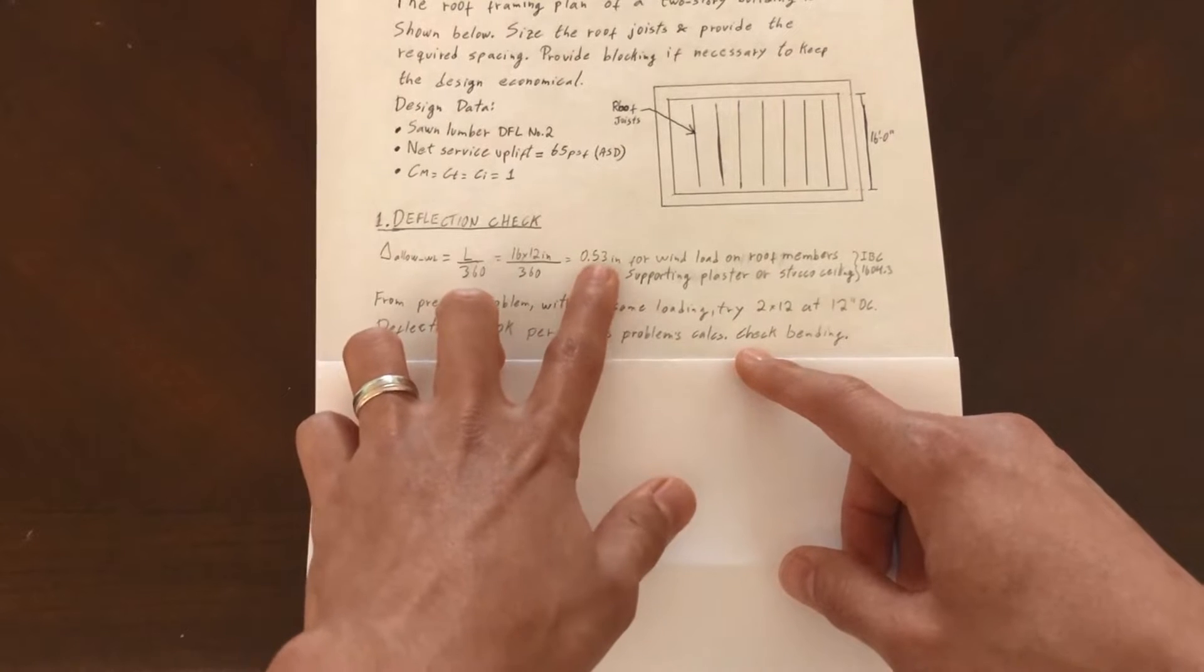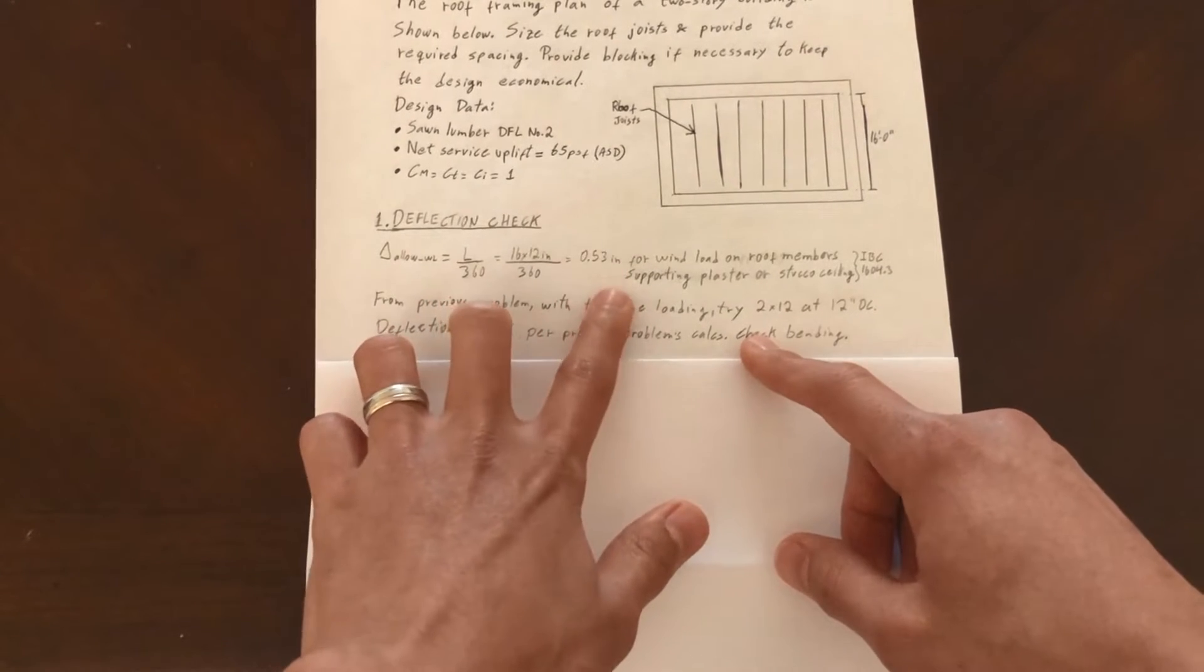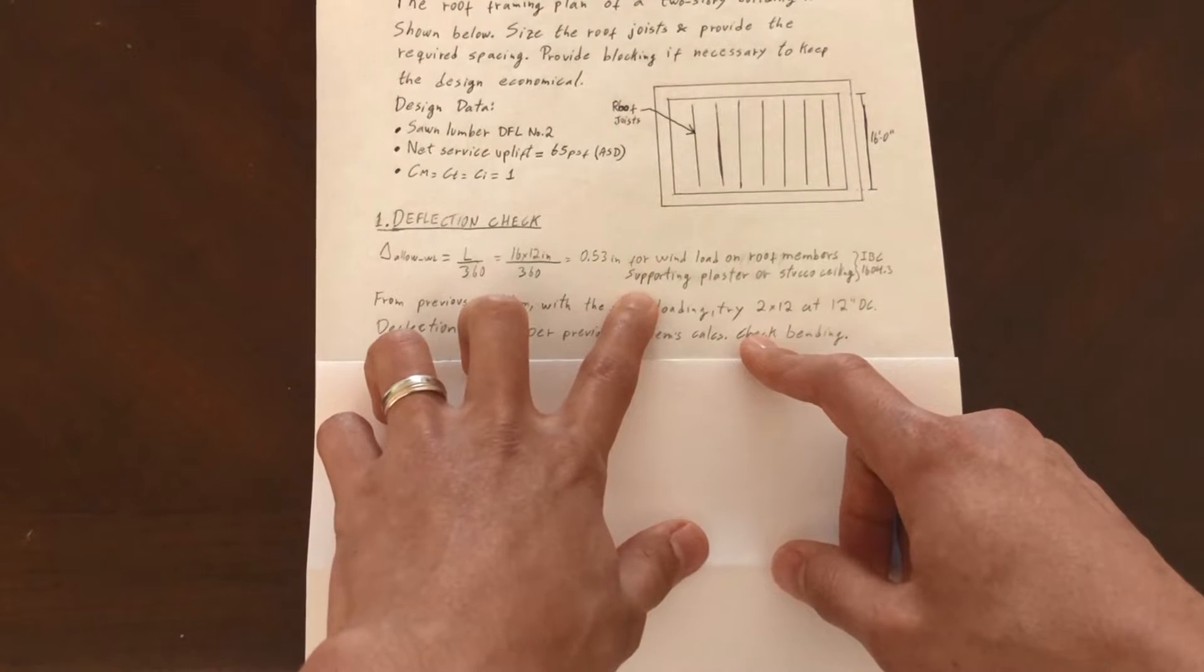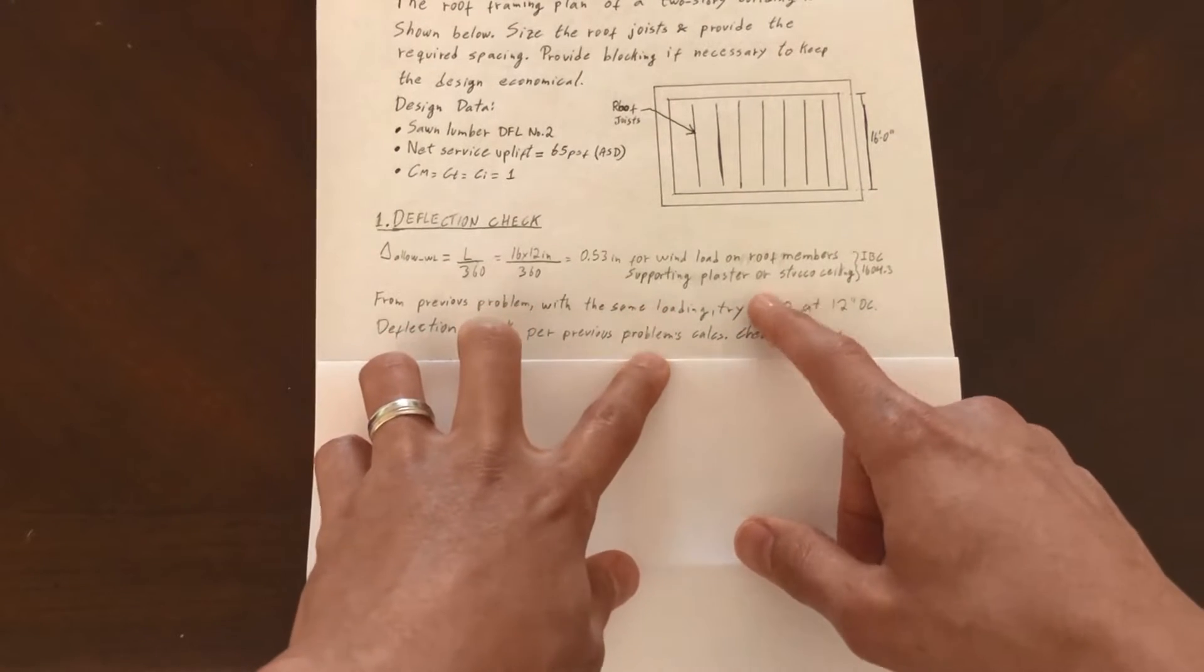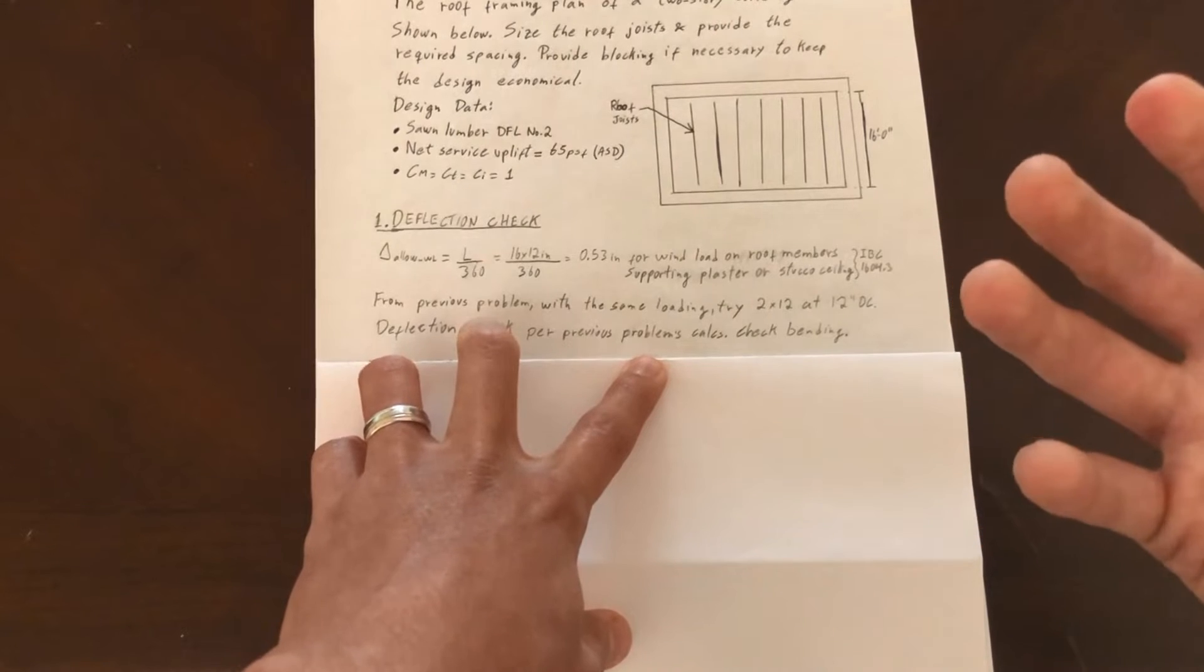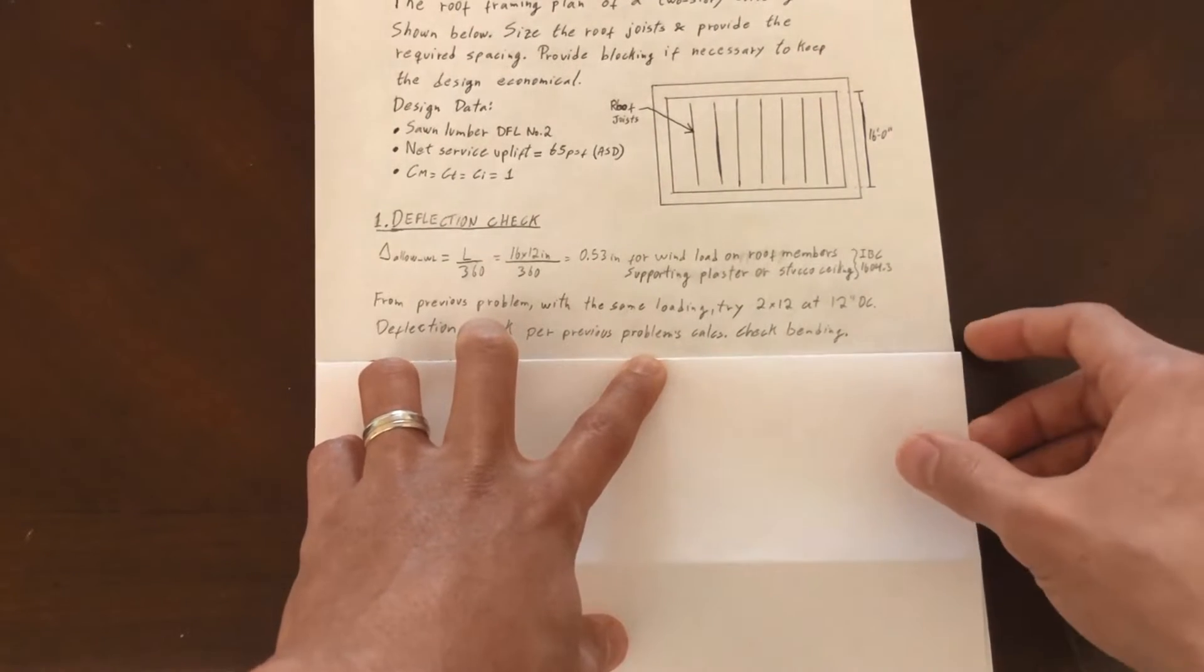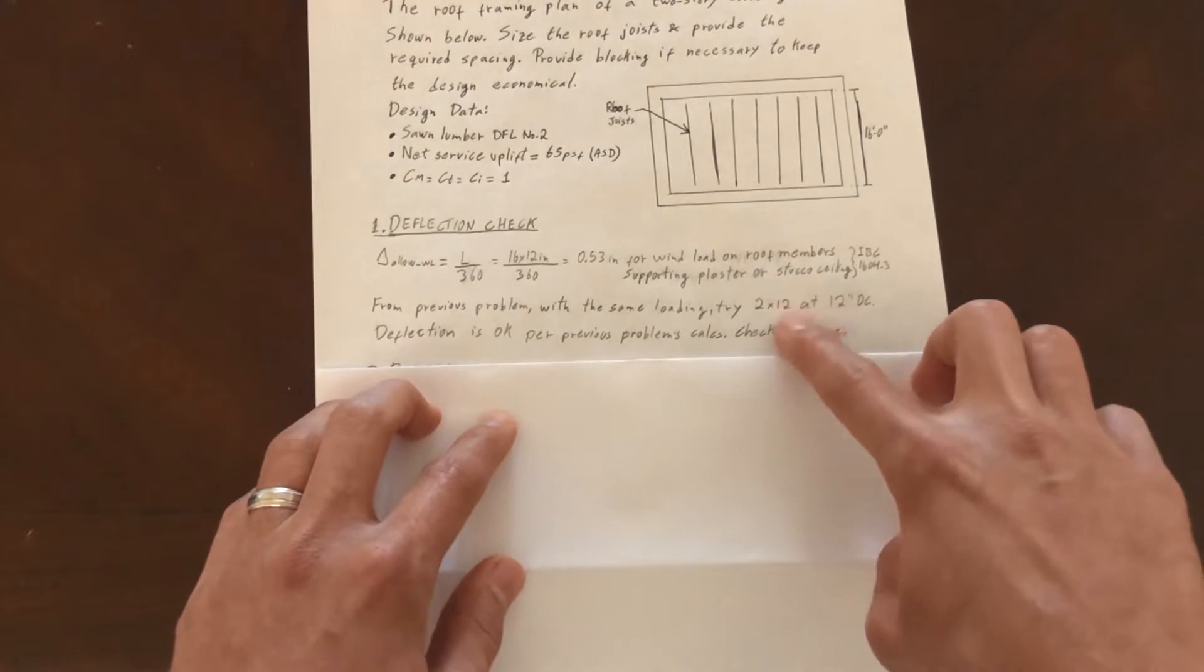If we try a 2 by 12 joist at 12 inches on center, which is the same as the previous problem, our maximum allowable deflection is 0.53 inches. This is assuming the most stringent case from IBC, which is for roof members supporting plaster or stucco ceiling.